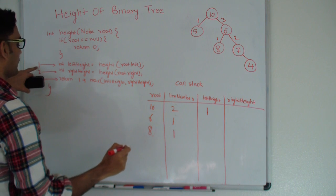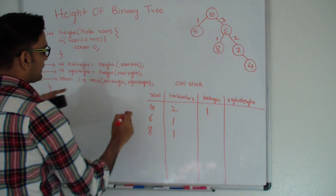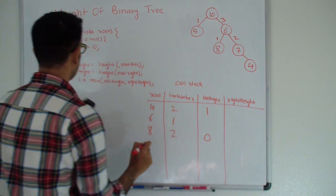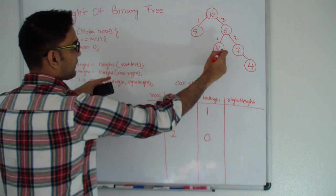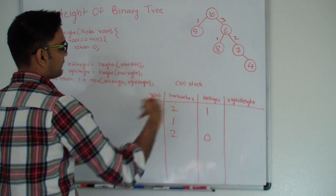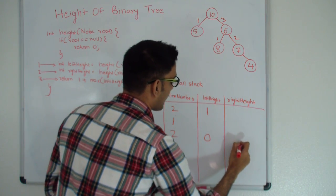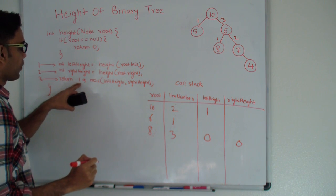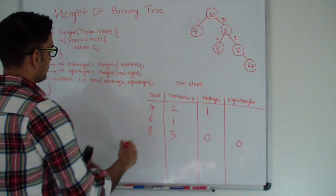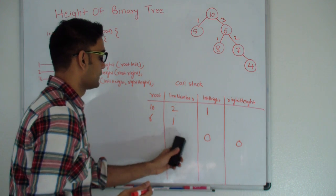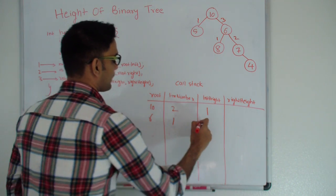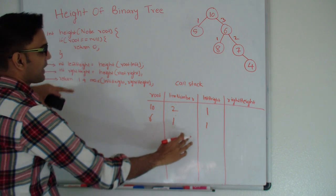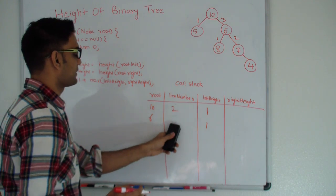Null returns 0 to 8. We are done with line number 1 for 8, setting left height to 0. We execute line number 2 for 8, and 8's right is also null, so it returns 0. Right height for 8 is set to 0. Line number 3 for 8 returns 1 plus max of 0 and 0, so 8 returns 1 to 6. Left height of 6 is set to 1 and we execute line number 2 of 6.